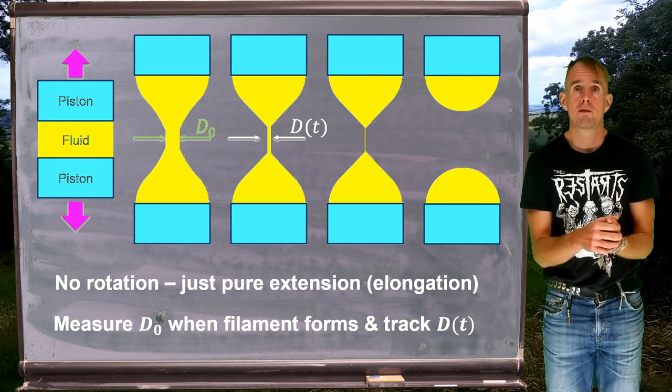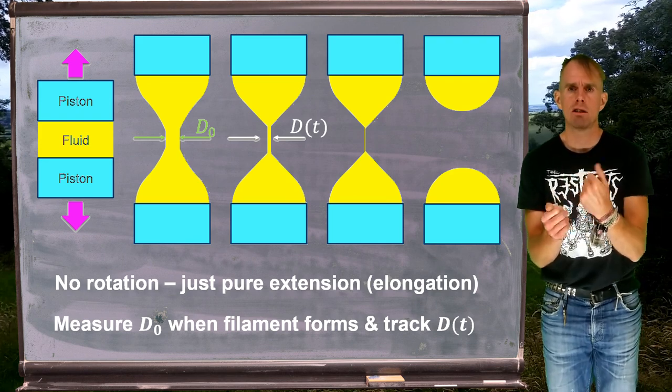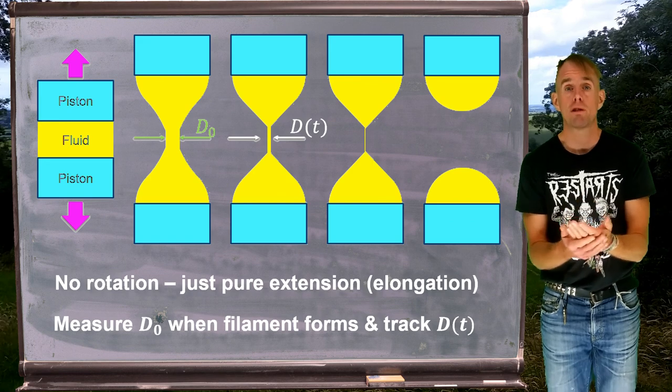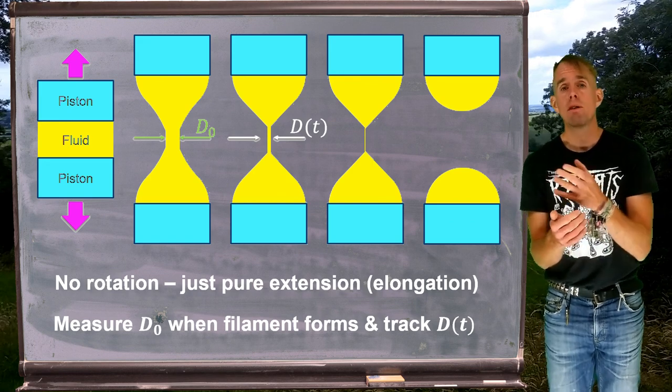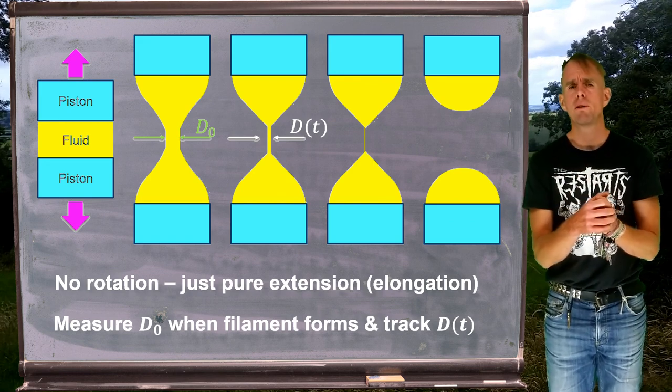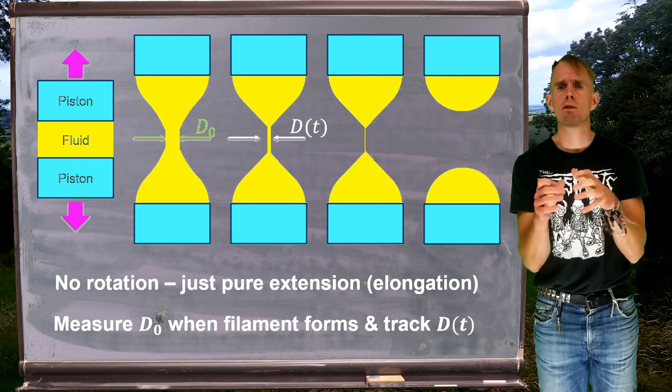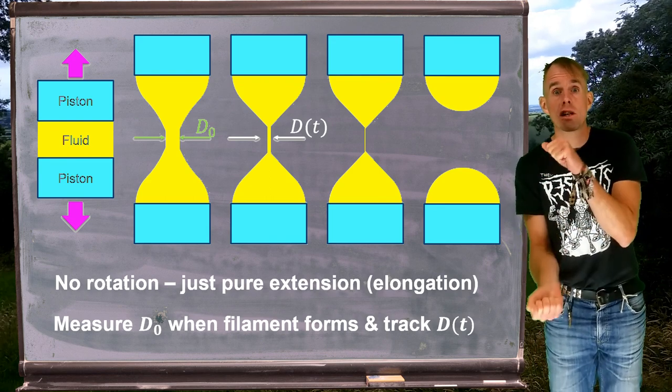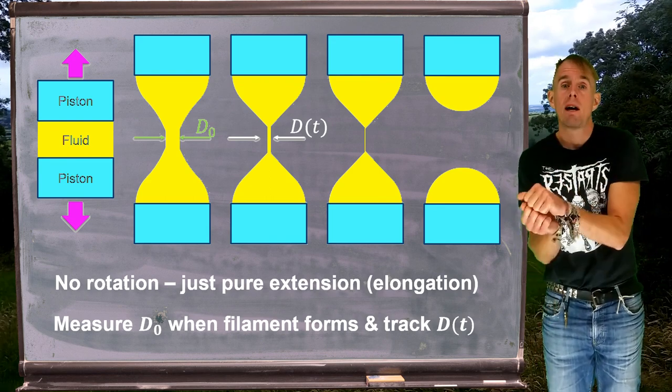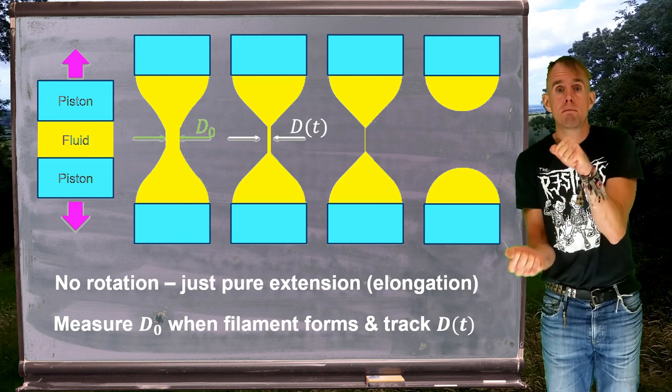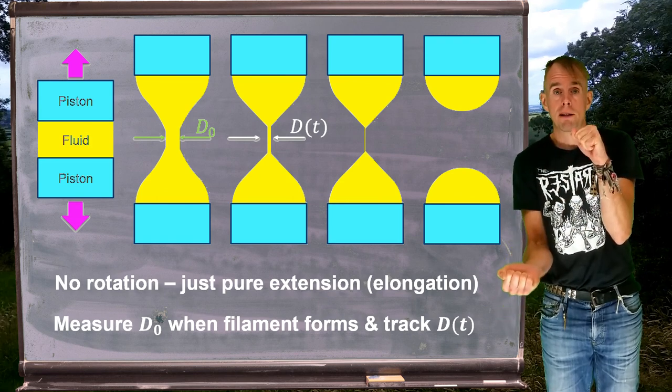And if we think of a Newtonian fluid, the only stress that's going to be present in this laminar regime is going to be viscous stress. If we think of a complex fluid, then we've got stresses that are involved with the stress relaxation of the polymer chains as they retract from being highly extended by that initial piston displacement.